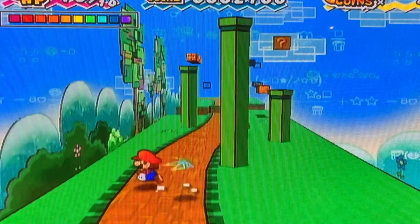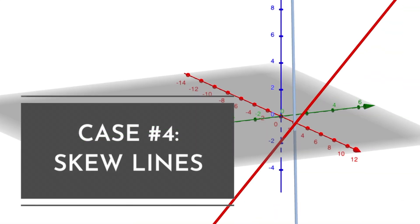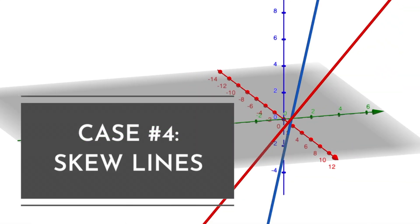So is that it? Do three-dimensional lines just intersect in the exact same way as two-dimensional lines? Well, hold up, because there is a mysterious fourth case that is not possible in two dimensions. When we enter the third dimension, there's another possibility, and that is skew lines.